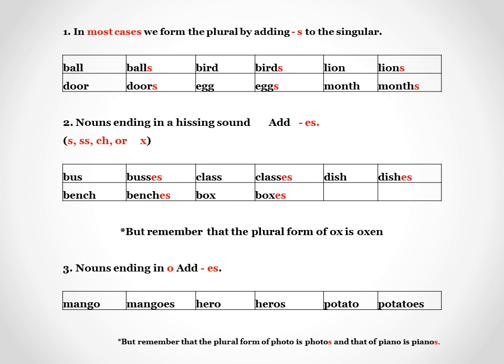Next, we move on to nouns ending in O — there we again add ES. For example, mango becomes mangoes, hero becomes heroes, potato becomes potatoes. But remember, the plural form of photo is photos and that of piano is pianos.